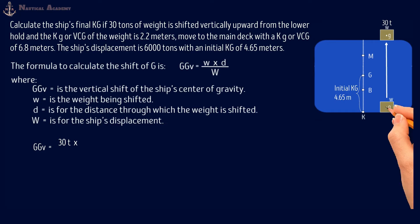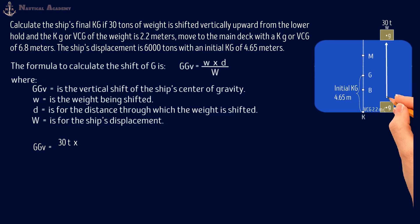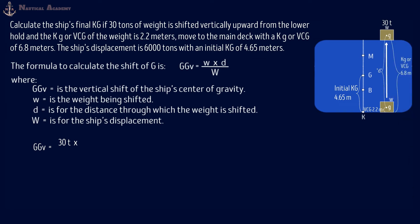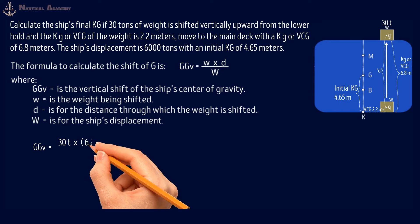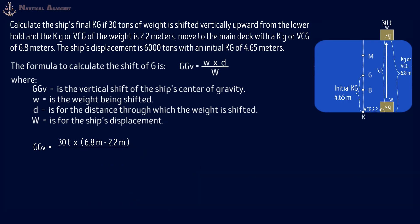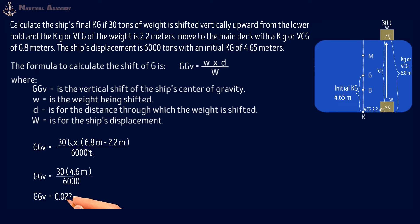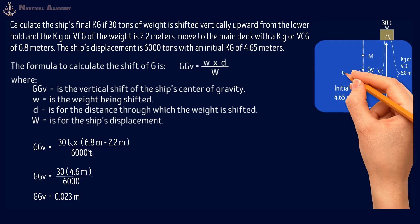We will assume that here is the center of gravity of the weight being shifted, marked as a dot and labeled small g. From the keel to small g, the vertical distance is 2.2 meters, which is the KG or VCG of the weight when it is in the lower hold. When the weight is shifted to the main deck, the vertical distance from the keel to the center of gravity of the weight is 6.8 meters. So for the distance, that is the vertical distance from the initial position of small g to the final position of small g after shifting — we subtract the smaller from the greater value: 6.8 meters minus 2.2 meters. Then divide by the ship's displacement of 6,000 tons. Canceling both units of tons, we have GGV equals 30 times 4.6 meters divided by 6,000, which equals 0.023 meters.